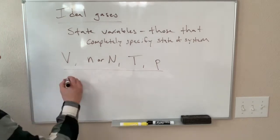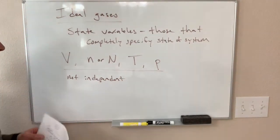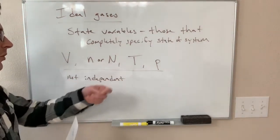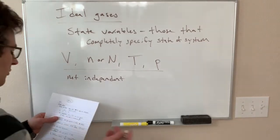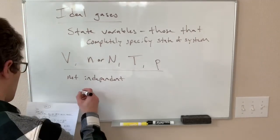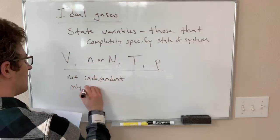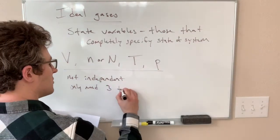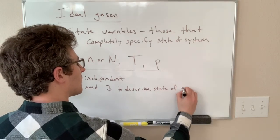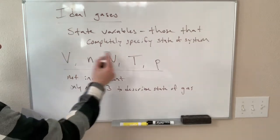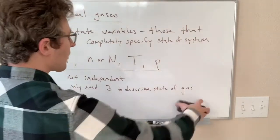These are not independent of one another, meaning that if we change one of them, at least one or more of the other ones also have to change. Another way we can put that is we cannot specify all four variables. We only need three of these to describe the state of our gas. Once we have decided what the values of three of them are, the value of the fourth one can be calculated from that.